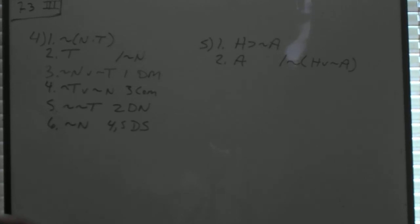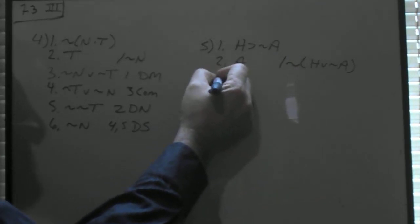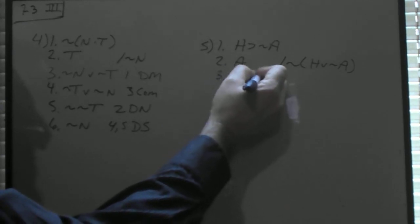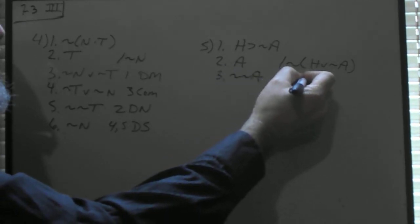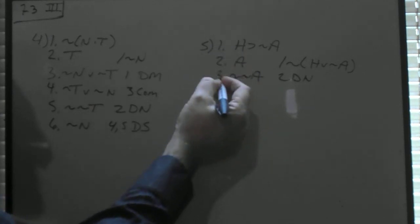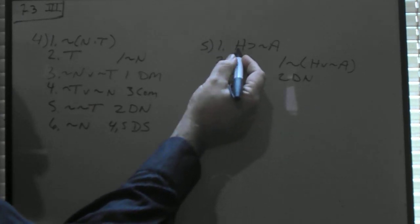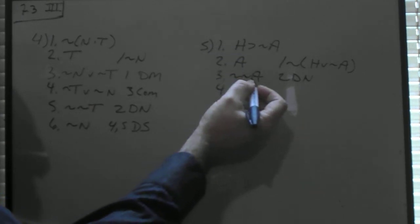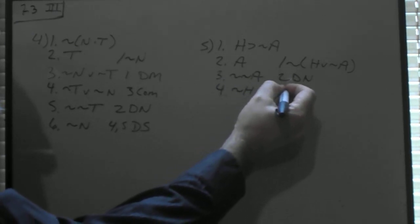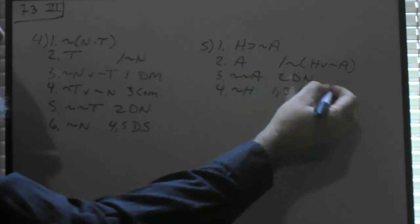We've already got the A on line 2, so what we need is the not H. We could do that from line 1 through modus tollens if we had a not not A, rather. So on line 2, we've got A. Line 3, let's make that not not A through double negation. And now 1 and 3 make that modus tollens. If H, then not A, not not A, therefore not H, 1 and 3 modus tollens.